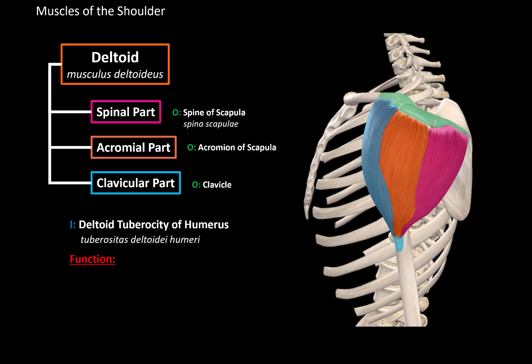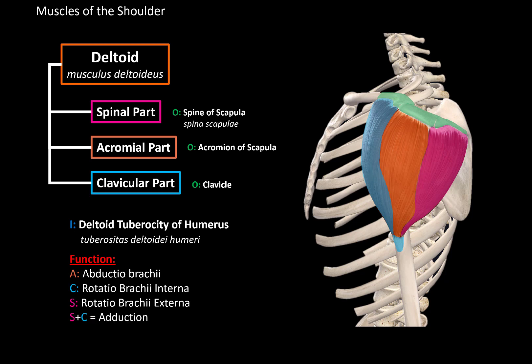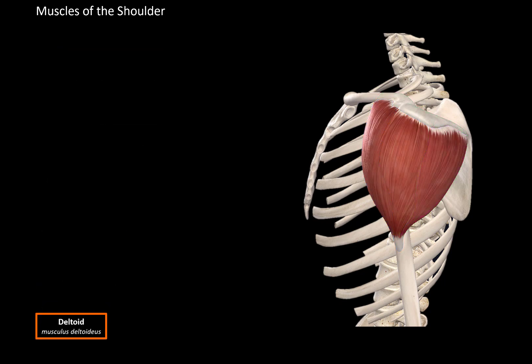The function of the deltoid muscle depends on which muscle fibers contract. If the acromial part contracts alone, it abducts the arm. If the clavicular part contracts alone, it rotates the arm internally. If the spinal part contracts alone, it rotates the arm externally. If the spinal part and the clavicular part contract, they adduct the arm. If the acromial part and the clavicular part contract, they flex the arm. And if the acromial part and the spinal part contract, they extend the arm.